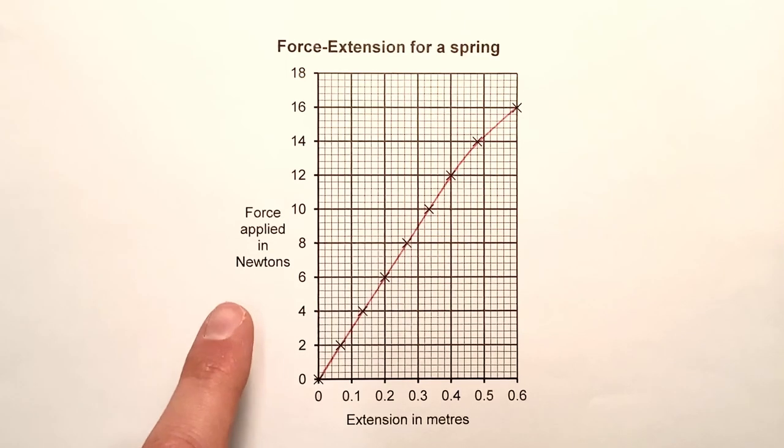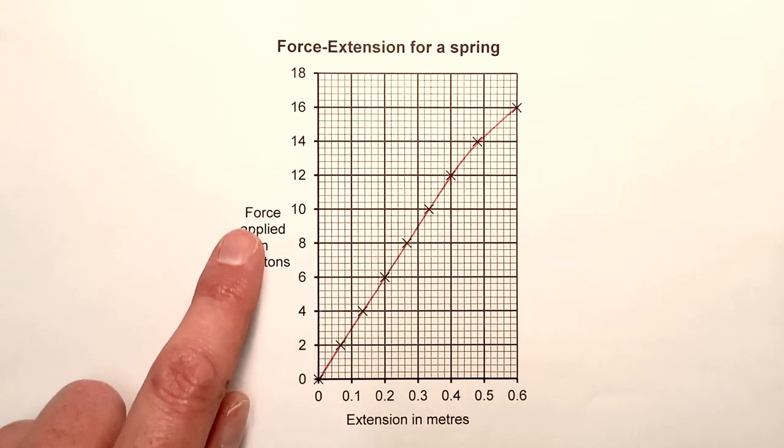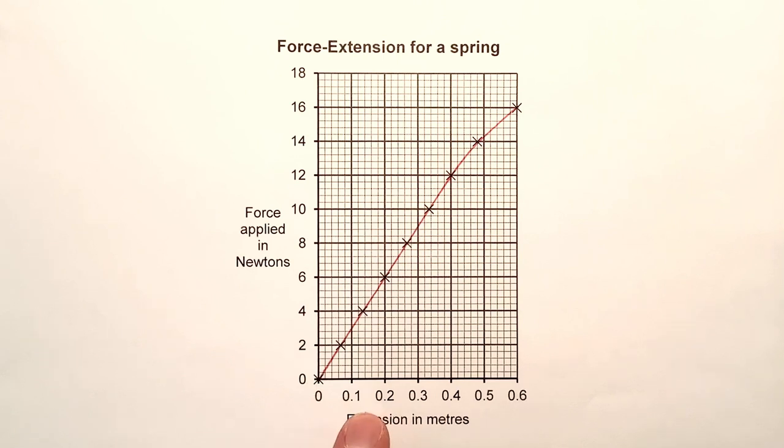Hooke's law says that the force applied to a spring is directly proportional to the extension up until the limit of proportionality. That means it should be a straight line graph through the origin, showing that force is directly proportional to extension up to some limit. We can see that this is a nice straight line section, but